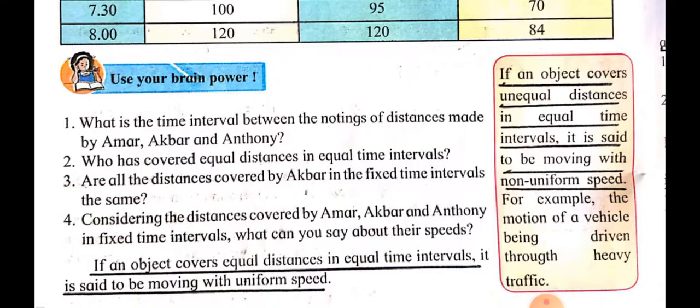If an object covers unequal distances in equal time intervals, it is said to be moving with non-uniform speed.